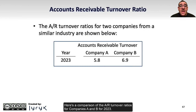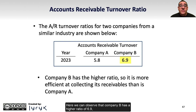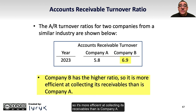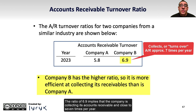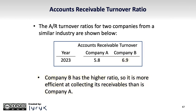Here's a comparison of the AR turnover ratios for Companies A and B for 2023. Company B has a higher ratio of 6.9, so it's more efficient at collecting its receivables than Company A. The ratio of 6.9 implies that the company is collecting its accounts receivable at close to seven times per year.